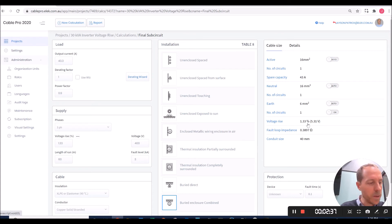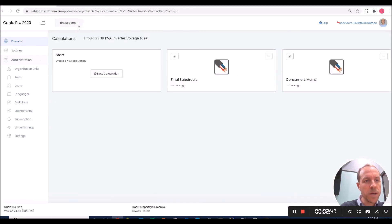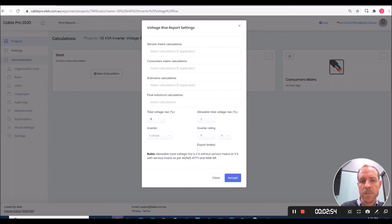There you have it. It's very quick and easy to do the same calculation using the software. Now, we have another feature within the project to produce a special voltage rise report. So for this, we need to select the calculations associated with the sections. So I've selected consumer's mains calculation, final sub-circuit calculation.